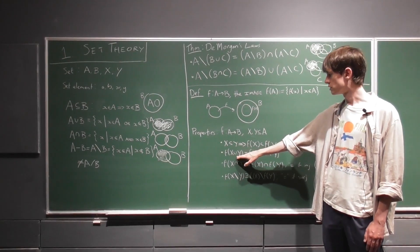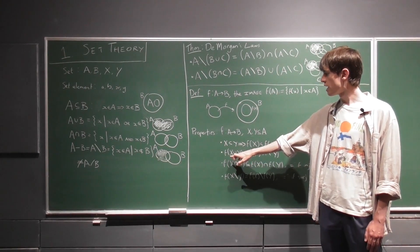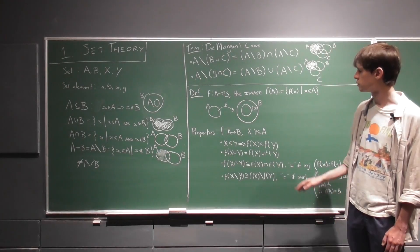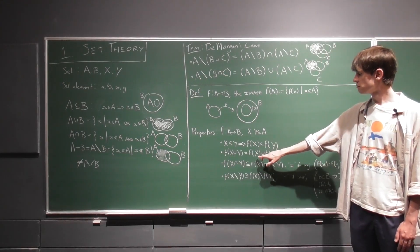Equality holds here for unions, so f of the union is equal to the union of the images.